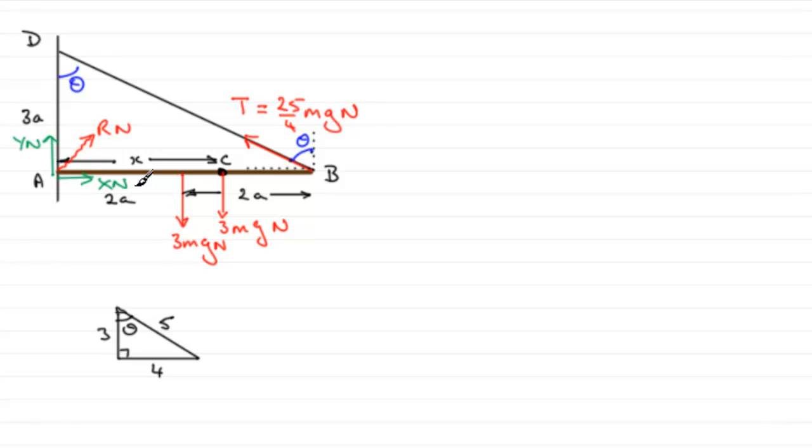So how do we show that this horizontal component of X Newtons equals 5mg? Well what we've got to do is resolve horizontally in the direction of the force X. So let's just resolve horizontally and what we've got is all of X acts to the right.